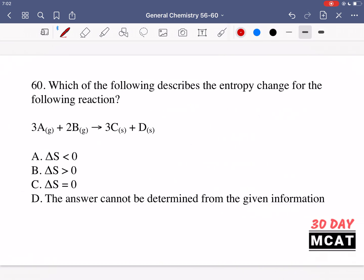In question 60 we're asked which of the following describes the entropy change for the following reaction. Two things to keep in mind: on the left side we have five moles total and on the right side we have four moles. We went to fewer moles. If you have more moles you have more disorder, and that's what entropy is.